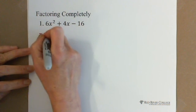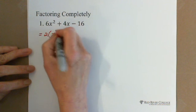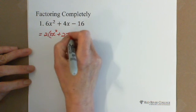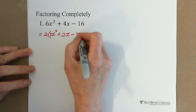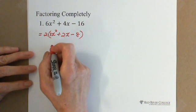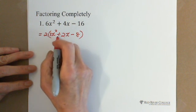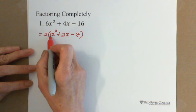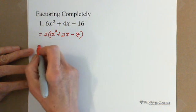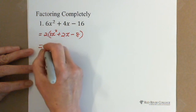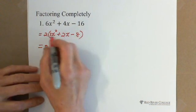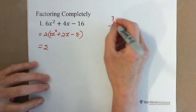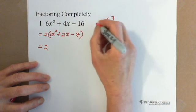We pull out 2, and we get 2 times (3x squared plus 2x minus 8). Then 3x squared plus 2x minus 8 is the general form of a trinomial where the coefficient is not 1. To do this kind of factoring, we need to multiply these two numbers: 3 with negative 8, and we get negative 24.